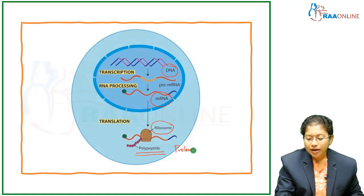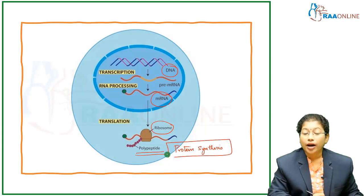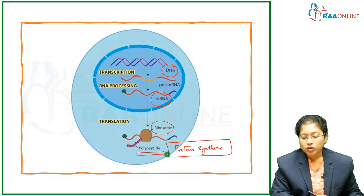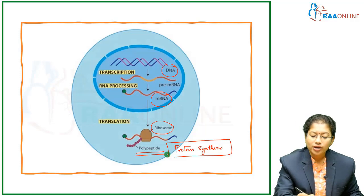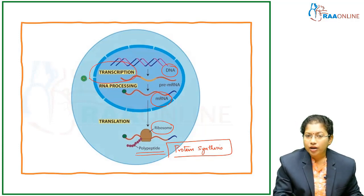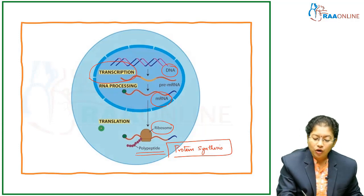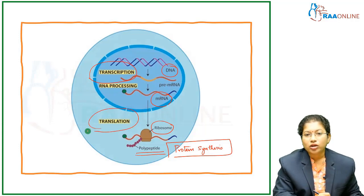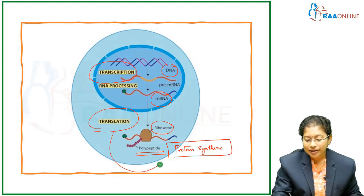Ultimately, protein synthesis takes place in the ribosome, which is a protein synthesizing machinery. DNA to mRNA is called transcription. mRNA to the decoding machinery, the ribosome, we call it translation. Translation means the protein is getting synthesized.